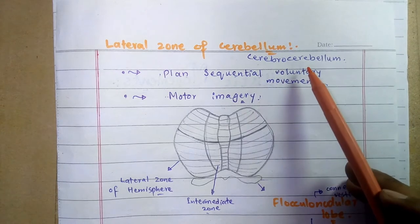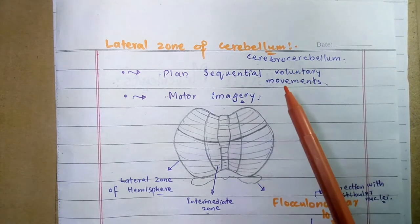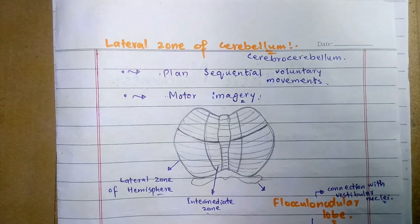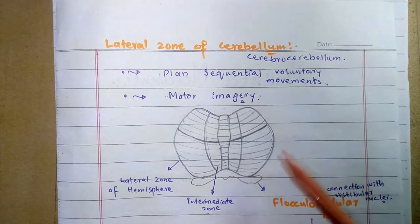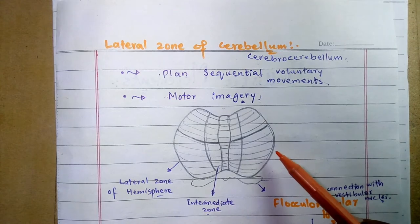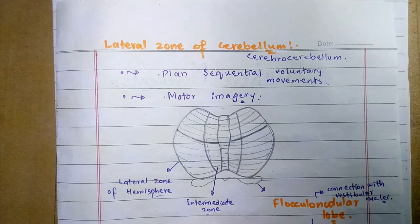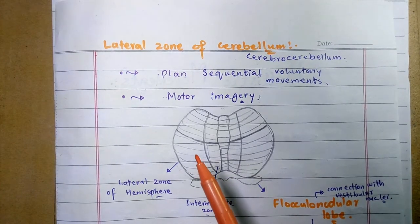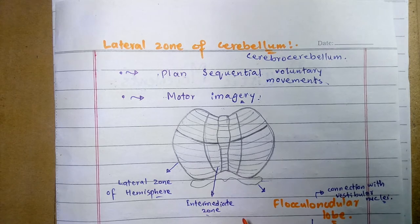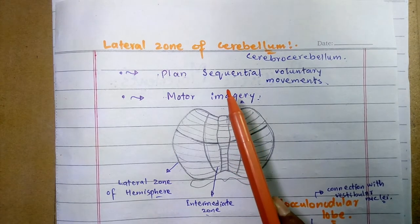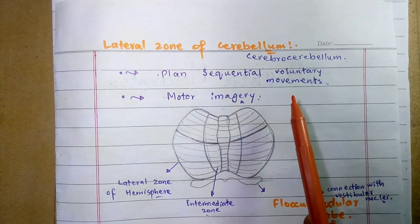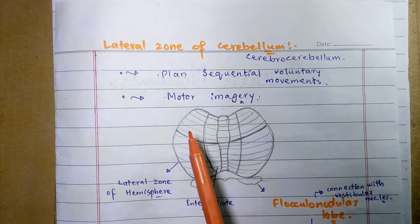The lateral zone is called the cerebro-cerebellum because of its extensive connections with the cerebral cortex, making it the most highly developed zone of all three. It receives its input from the cerebral motor cortex, pre-motor cortex, and somatosensory cortex, then transmits output signals back to the brain to plan sequential voluntary body and limb movements.